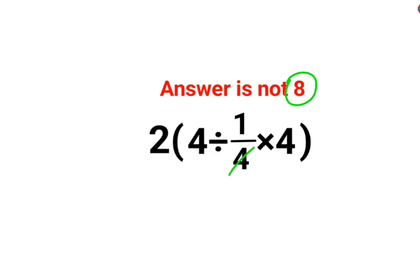What people do is they are going to do the bracket first. So 4 and 4 gets cancelled. You are left with 2 multiplied by 4 because this entire bracket comes out to be just 4. So the answer is supposed to be 8.